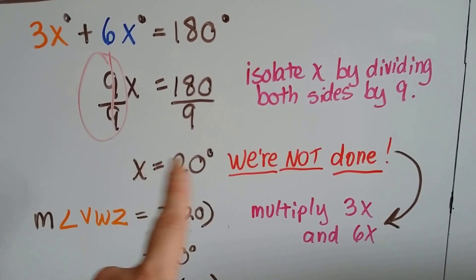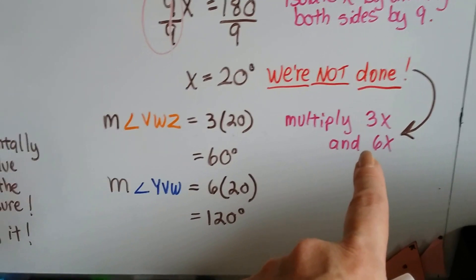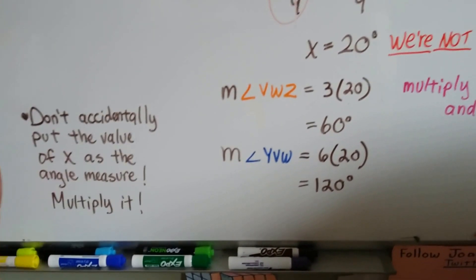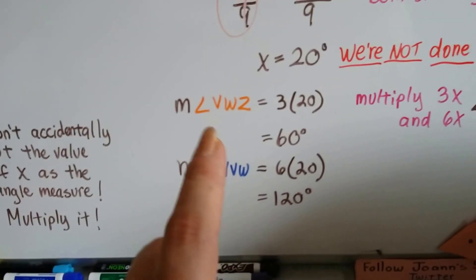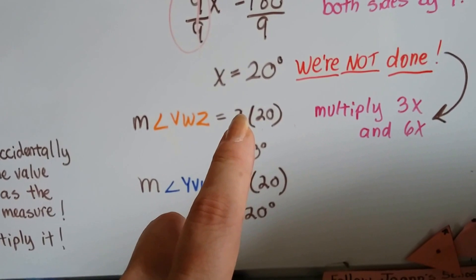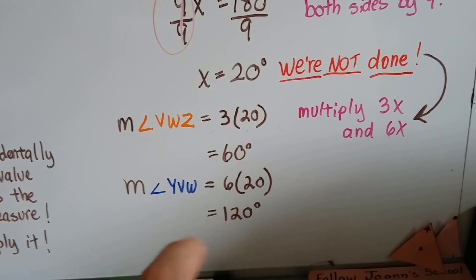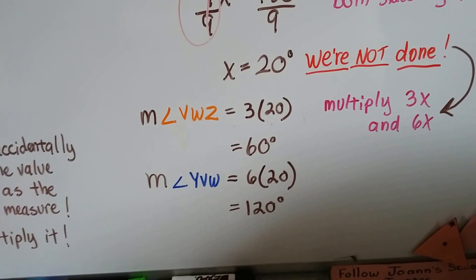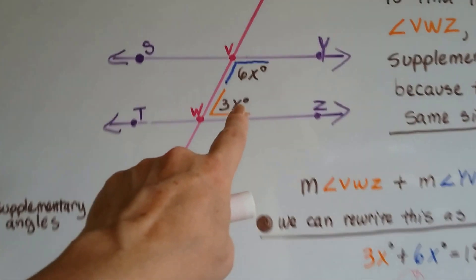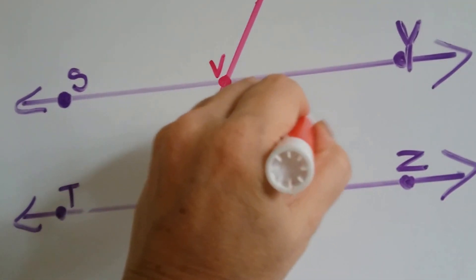But we're not done. X equals 20, but the angles are 3X and 6X — not X itself. That's a big mistake a lot of people make, so don't put the value of X as the angle measure. We still need to multiply. The measure of angle VWZ is 3 times 20, which is 60 degrees. The measure of angle YVW is 6 times 20, which is 120 degrees. So the orange angle is 60 and the blue angle is 120.